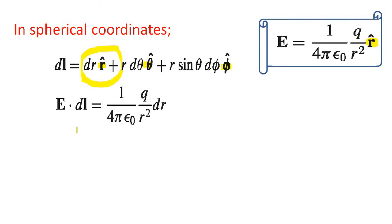When we are taking E dot dL, except this first term all others will be zero. So E dot dL equal to 1 by 4π epsilon 0 Q by R square dr. Let us integrate this term.